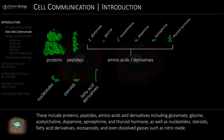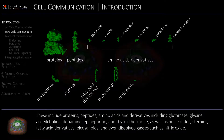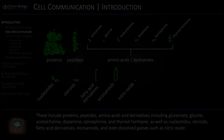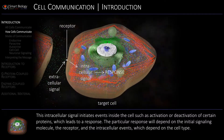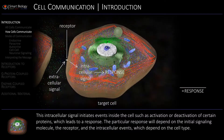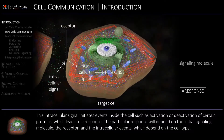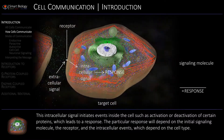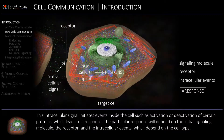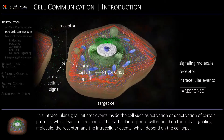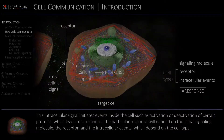Fatty acid derivatives, eicosanoids, and even dissolved gases such as nitric oxide. The particular response will depend on the initial signaling molecule, the receptor, and the intracellular events, which depend on the cell type.